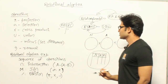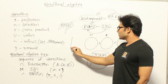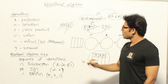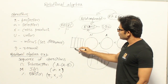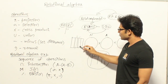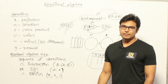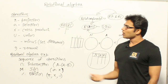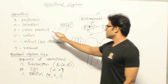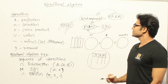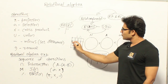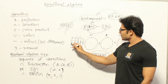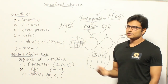The first operation is projection. If you have a table — here called a relation — and you want to select only a few columns from it, we use projection. Projecting some attributes gives you only those columns from the table. The next operation is selection. If you want to select only a few tuples — every row is called a tuple — then we use selection.